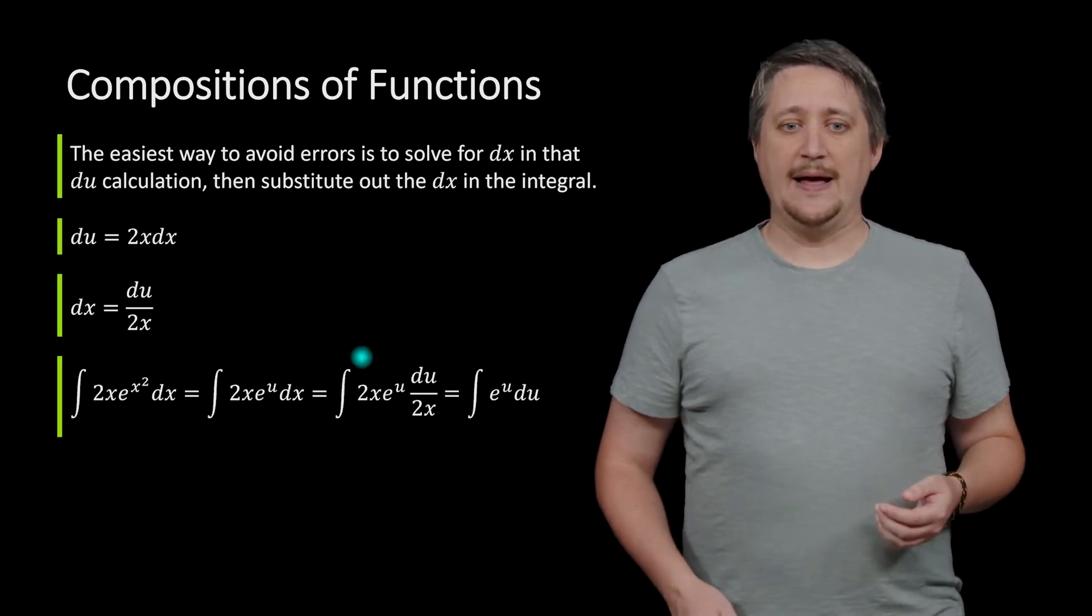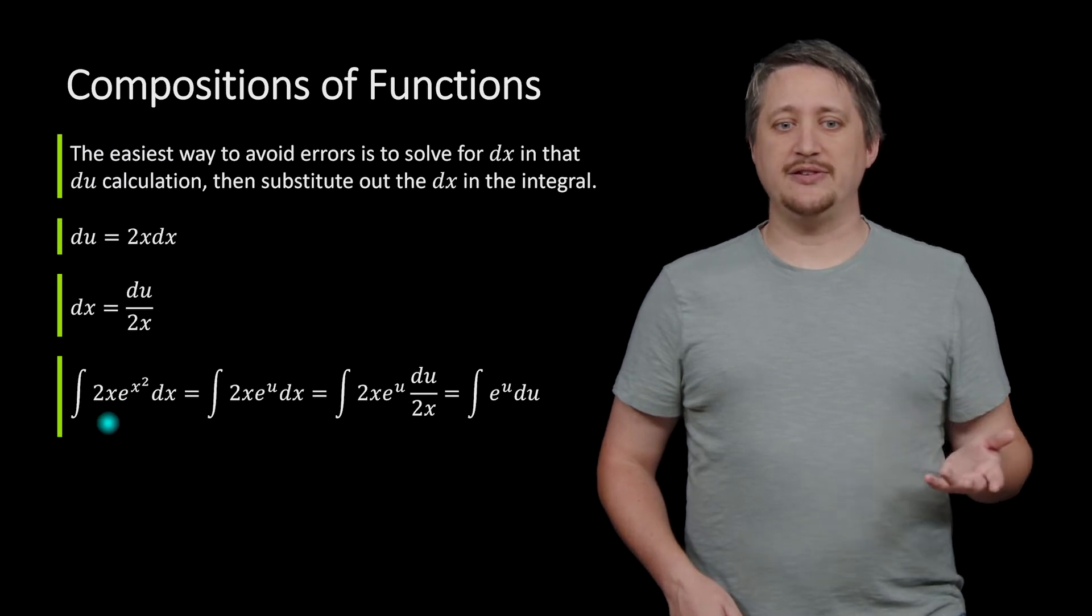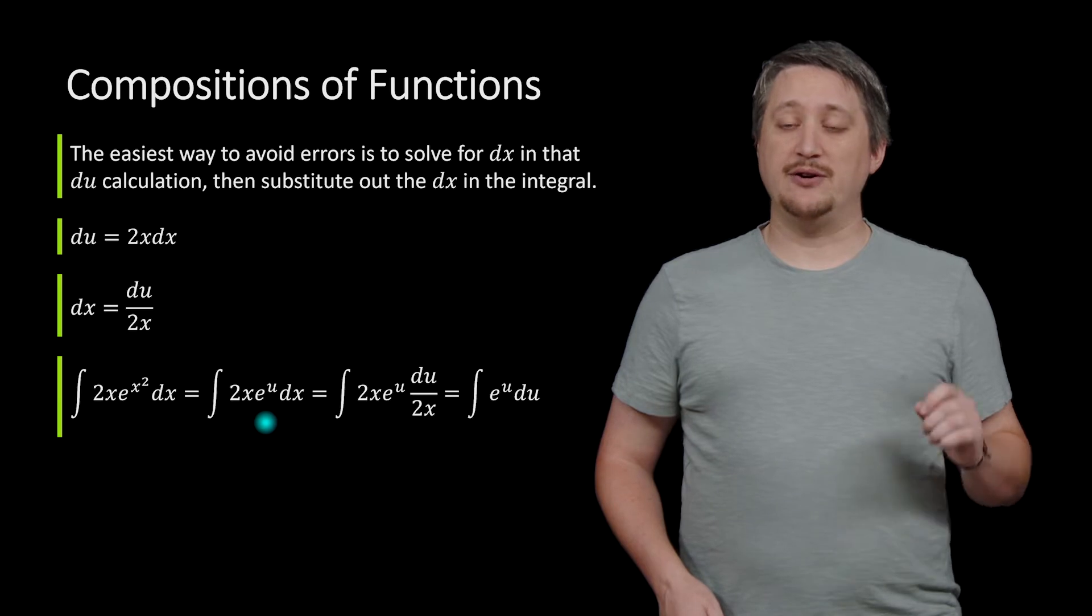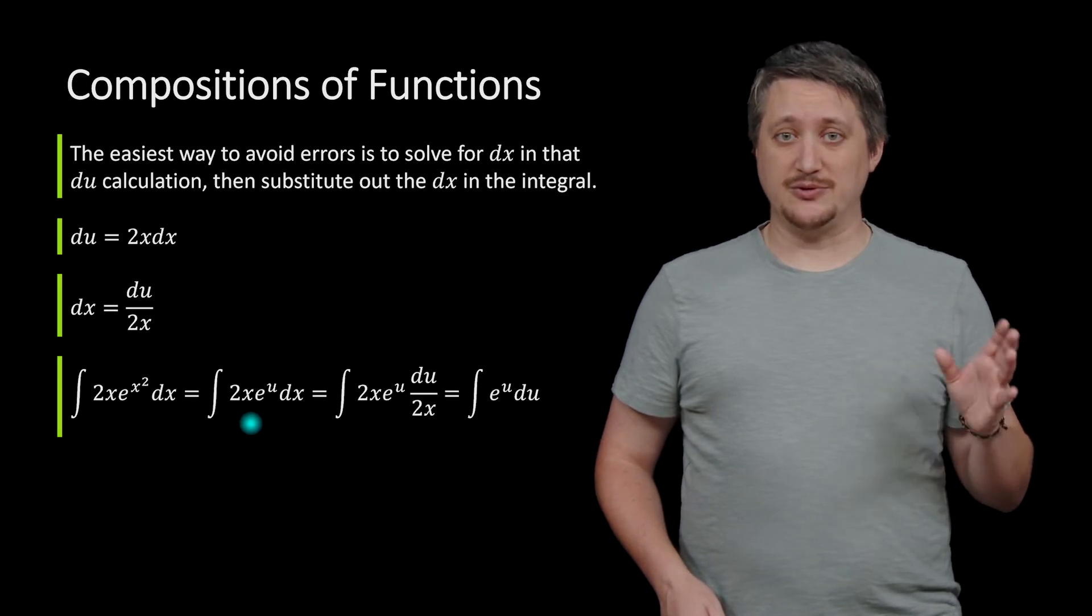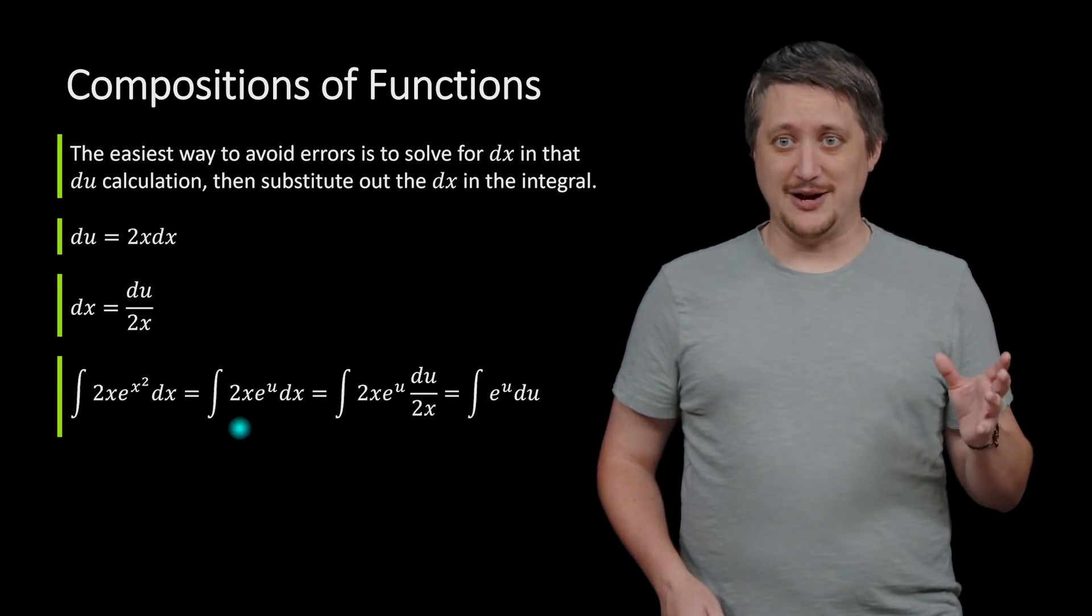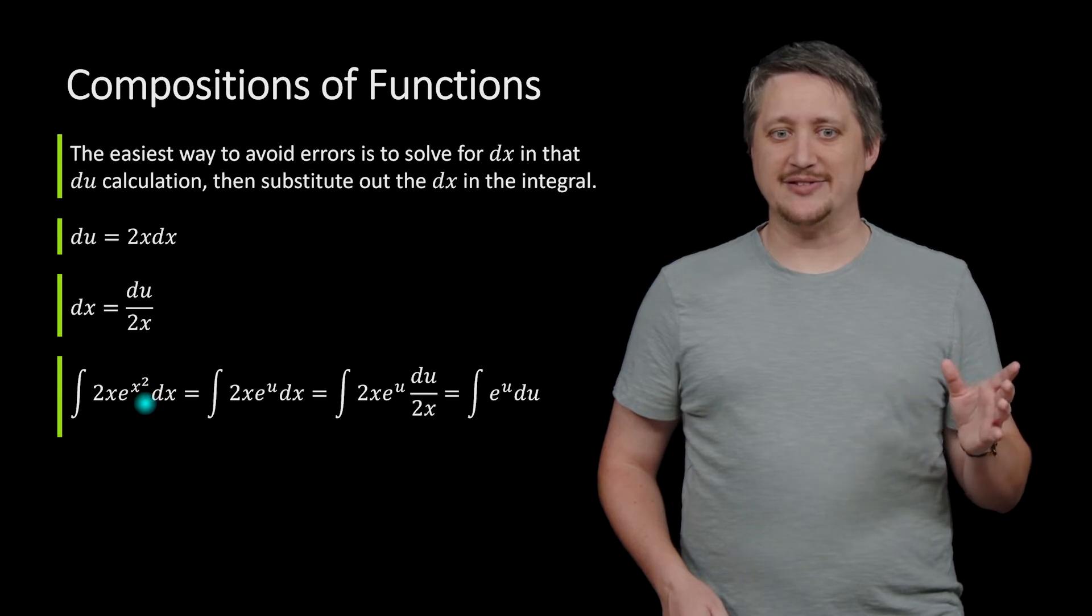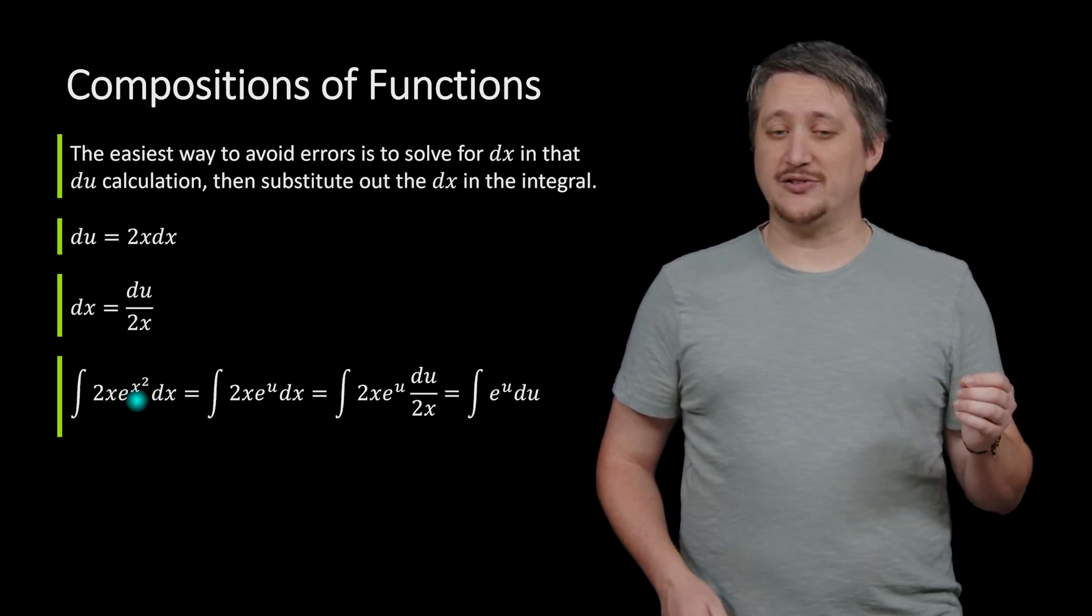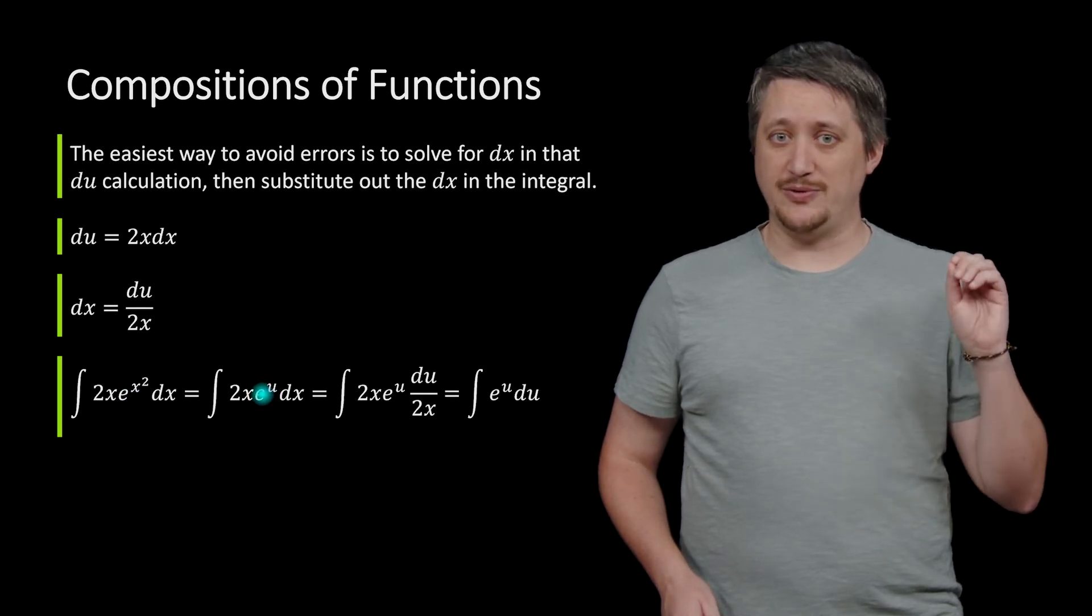But then I can substitute that into where the dx is in the integral. So to sort of go through the whole process, I started with this 2x e to the x squared dx. I substitute out first just the thing that I sort of made u to sub out. Okay, I recognize that this x squared has this 2x outside, so I think this x squared is going to be a good candidate for my u. So I'm just going to substitute that piece, just that one u.